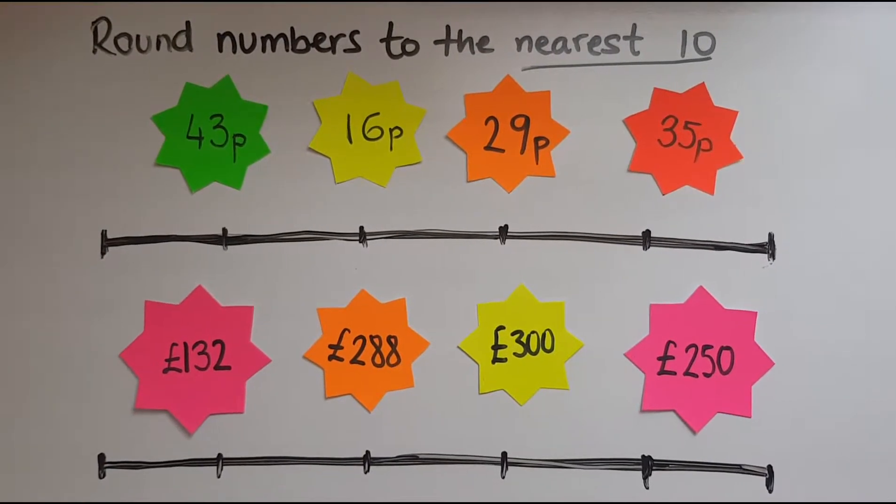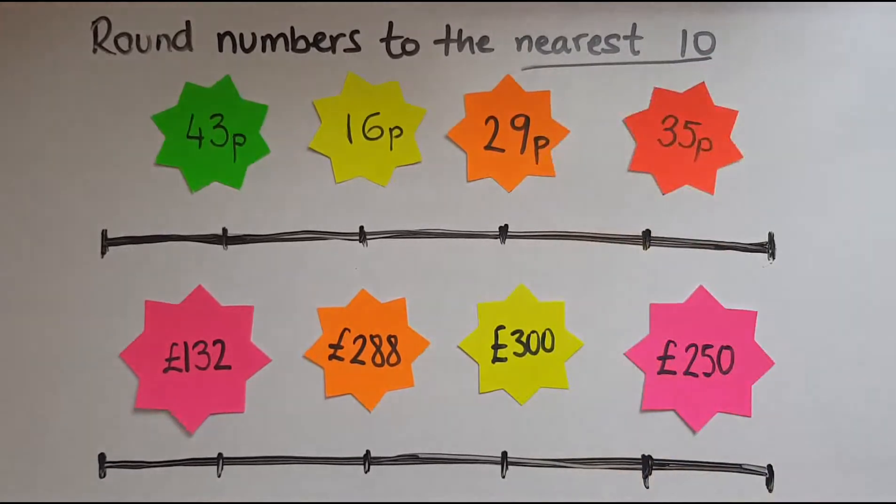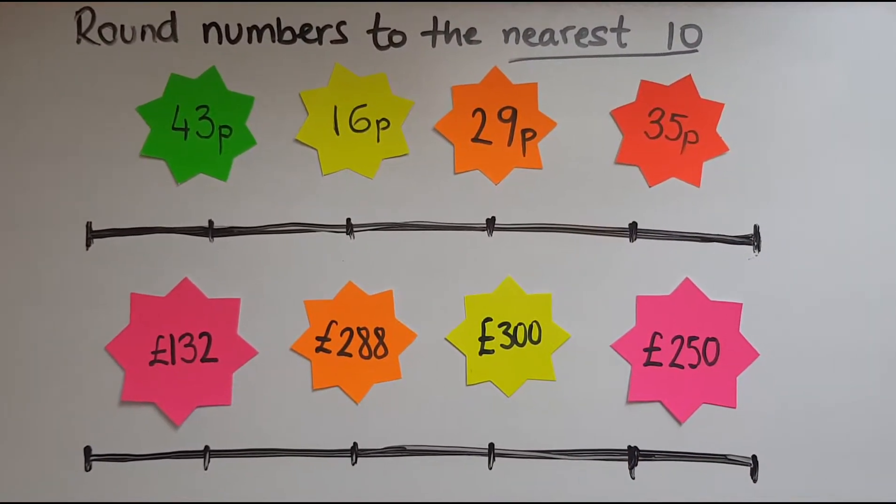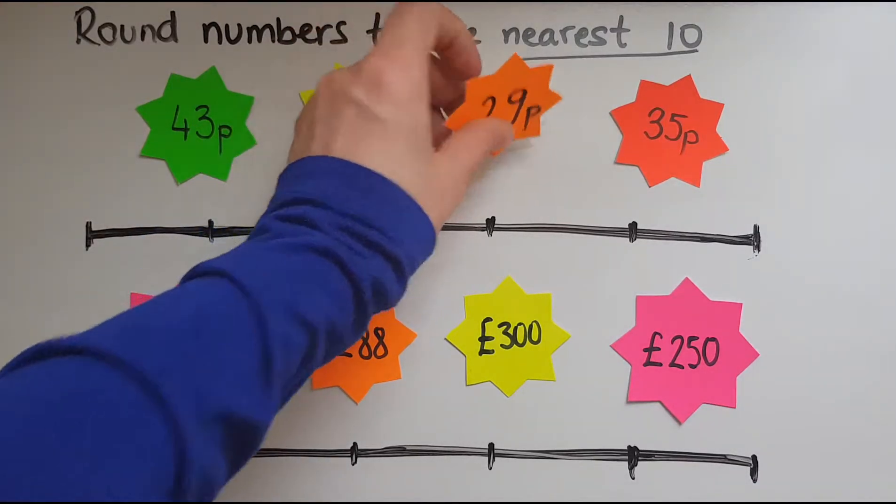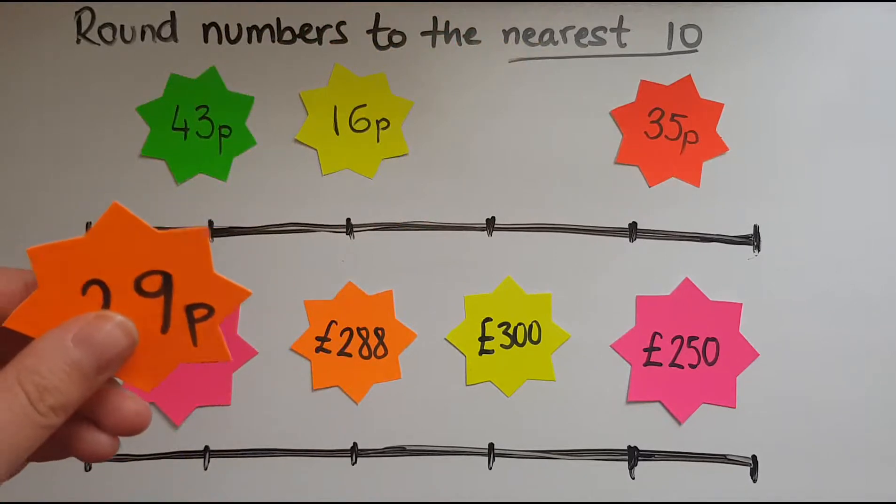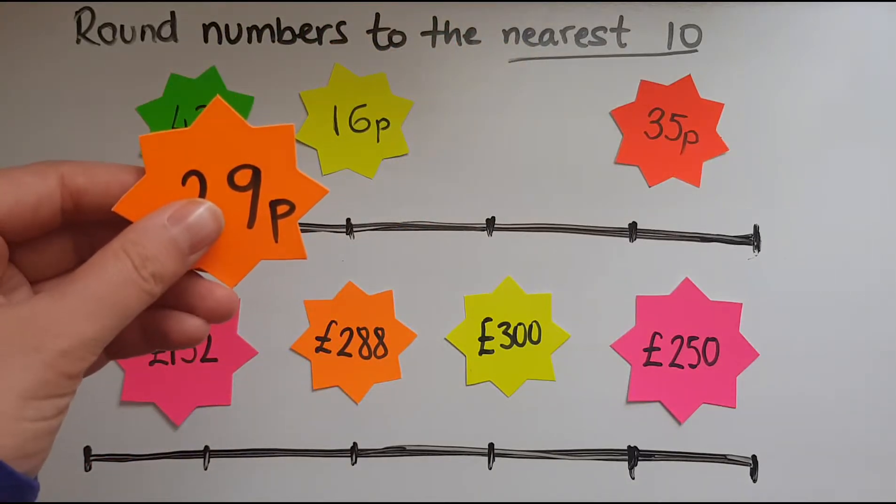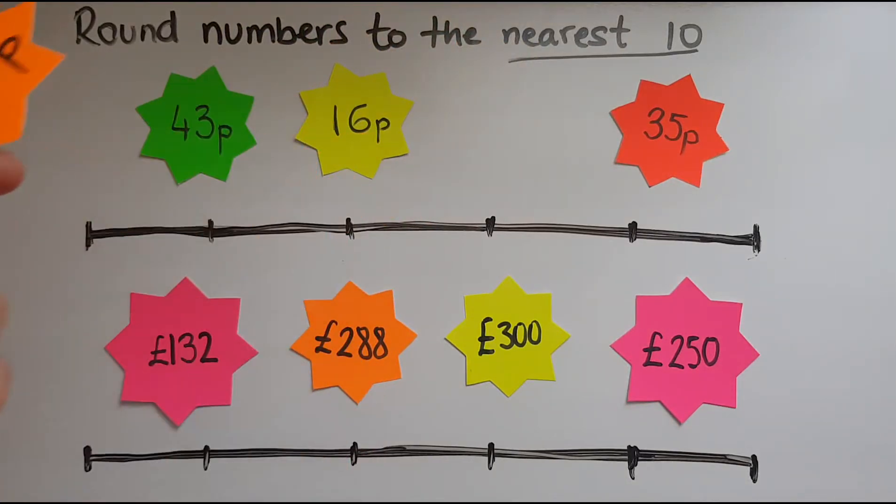In this video we learn to round numbers to the nearest 10. Nearest 10, what does that mean? It means that you're counting up in tens and you're finding which of these tens is the number closest to. So we're counting up in tens just like before, 0, 10, 20, 30, 40 and so on.